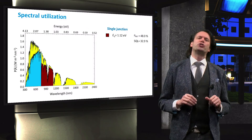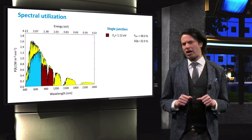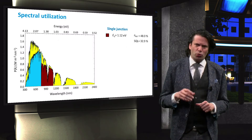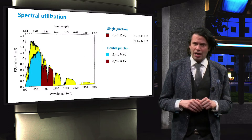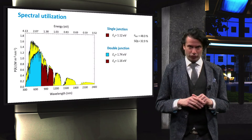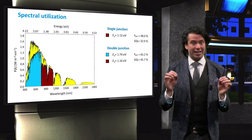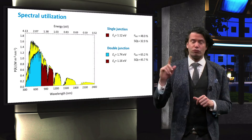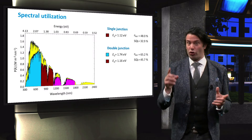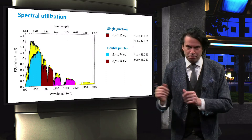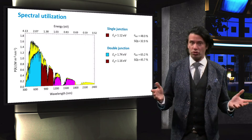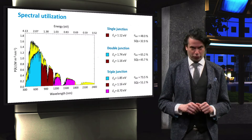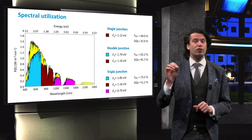If we introduce a second junction, the thermalization losses in the visible part of the spectrum are strongly decreased. An optimal tandem configuration has a junction with a bandgap energy of 1.74 eV and one with a 1.16 eV bandgap. The ultimate efficiency of such a tandem device is increased to over 65 percent, and the Shockley-Queisser limit is increased to almost 46 percent. If we introduce a third junction aimed at the infrared part of the spectrum, we can strongly decrease the losses due to non-absorption. An optimal triple junction device has an ultimate efficiency of 73.5 percent and a Shockley-Queisser limit of over 51 percent.